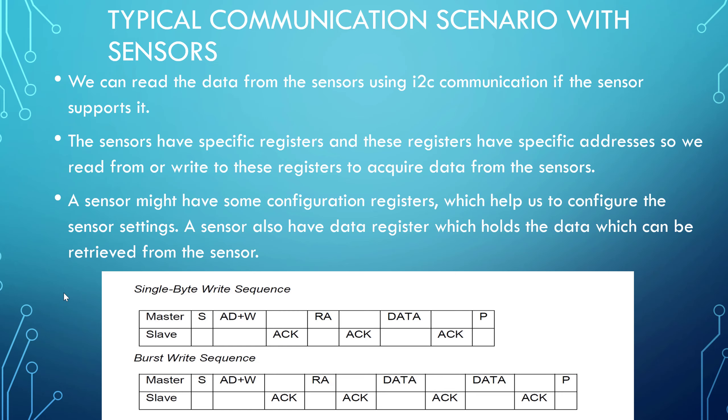Let's see a typical scenario for writing a single byte, reading a single byte, burst writing, and burst reading. Many sensors are I2C compatible and we will use a sensor in a later example. Sensors have specific registers with specific addresses, and we read from or write to these registers to acquire data. The sensor's CPU reads from external signal lines and stores the data in internal registers, from which we read.